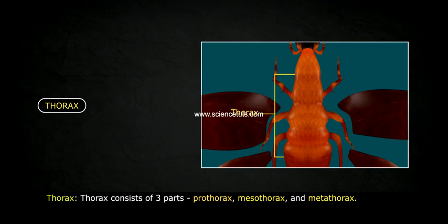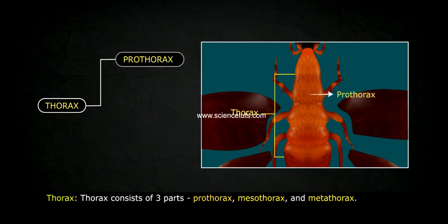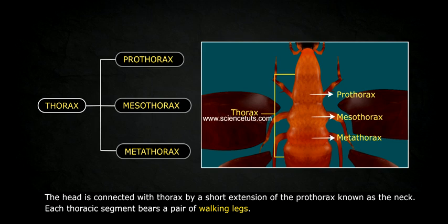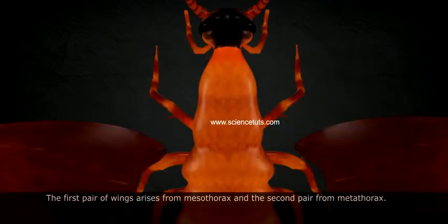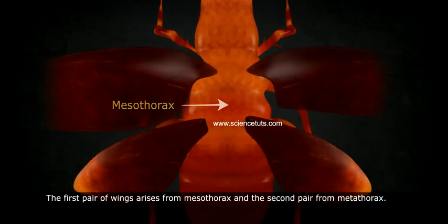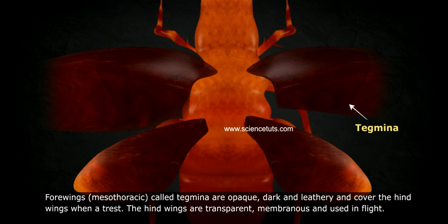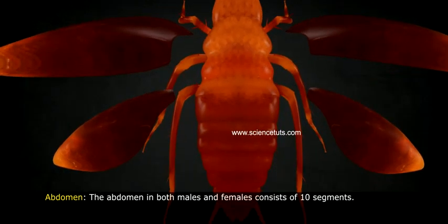The thorax consists of three parts: prothorax, mesothorax, and metathorax. The head is connected with the thorax by a short extension of the prothorax known as the neck. Each thoracic segment bears a pair of walking legs. The first pair of wings arises from the mesothorax and the second pair from the metathorax. The forewings from the mesothorax, called tegmina, are opaque, dark, and leathery, covering the hind wings when at rest. The hind wings are transparent, membranous, and used in flight.